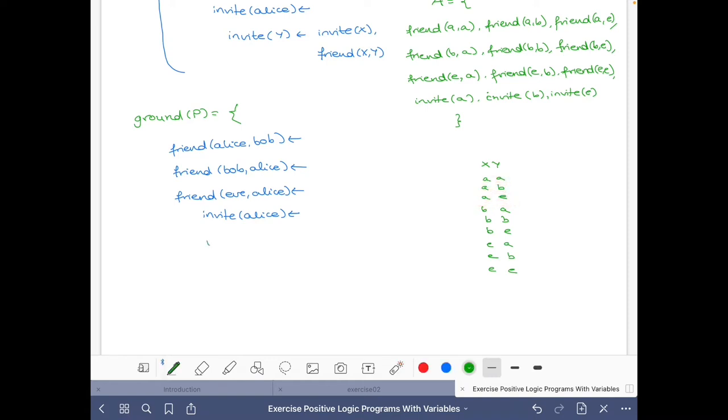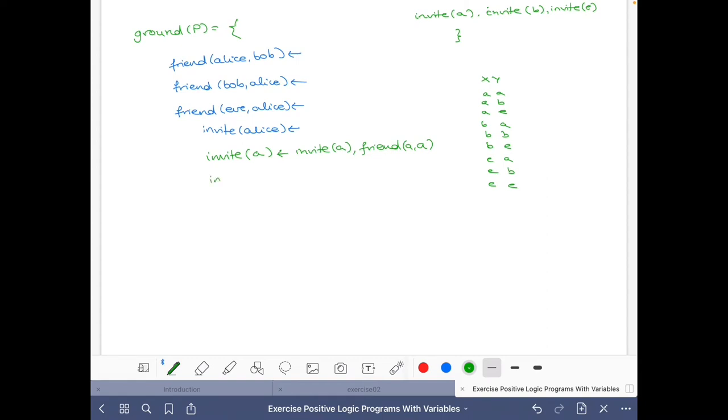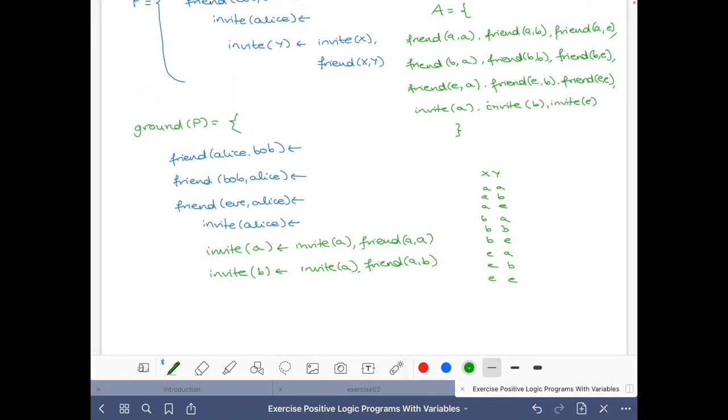So basically what I have to do is to replace X and Y by each combination of the ground terms in the Herbrand universe. So we have again quite some combinations, exactly the same as here, nine combinations. We have X Y, then we can have AA, AB, AE, BA, BB, BE, EA, EB, EE.